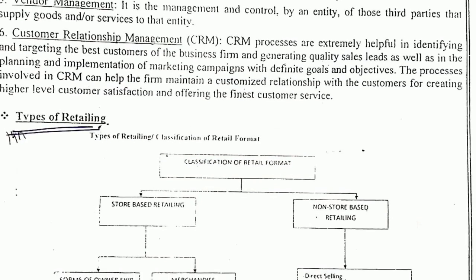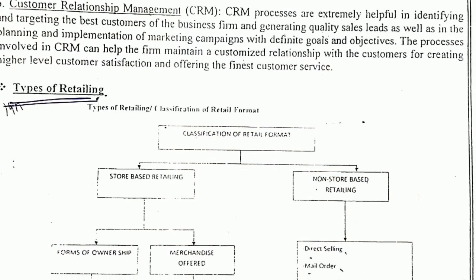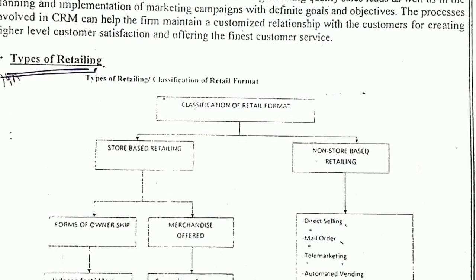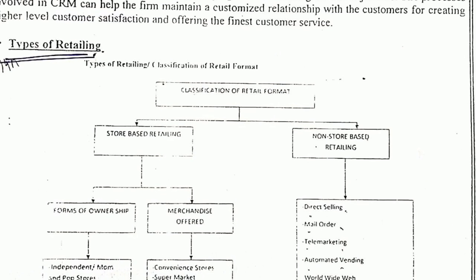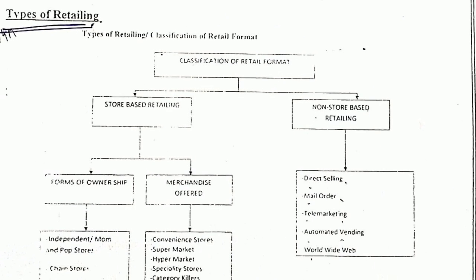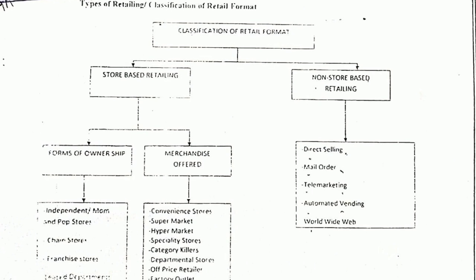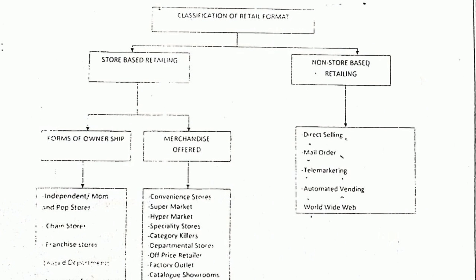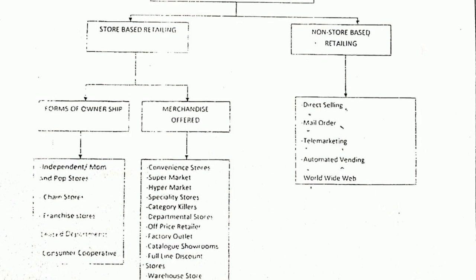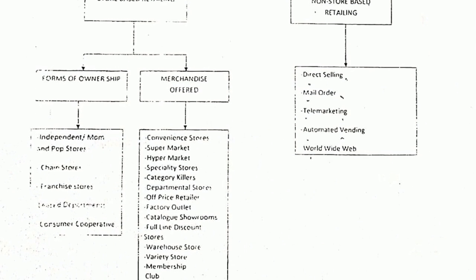Classification of retail formats: what types of retail shops are there? There are two types — store-based and non-store-based. Store-based retailing refers to a particular physical place where the consumer goes and purchases products. Non-store-based retailing means selling goods and services through online or electronic devices. Store-based retailing is further divided into forms of ownership and merchandise offer.